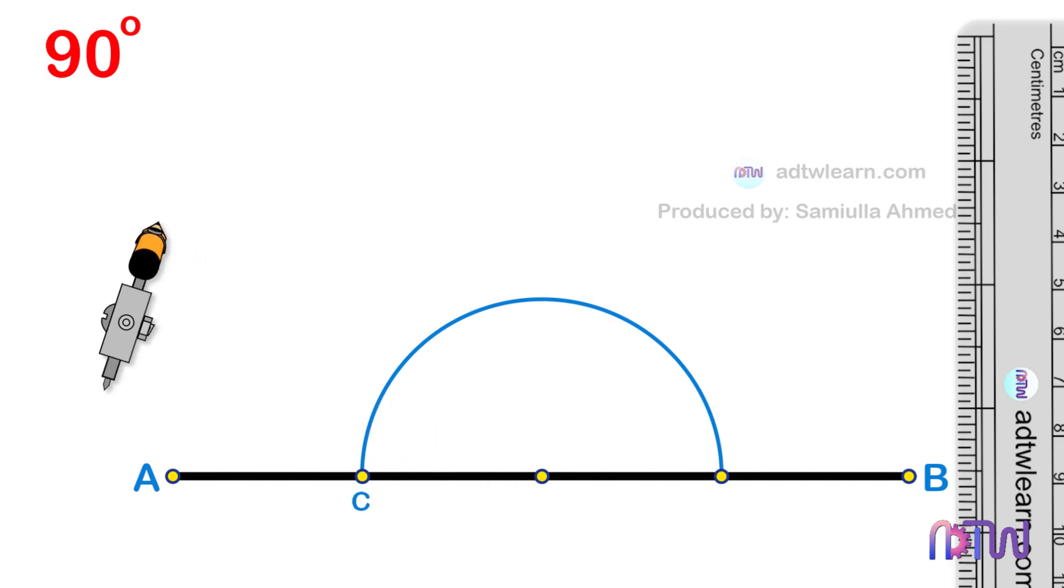Label these points as C and D. Also label this center point as O. After this, adjust the compass to the necessary length, and using these points C and D as centers, cut arcs as shown.